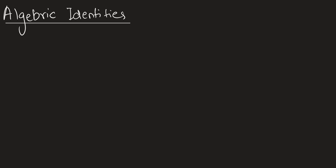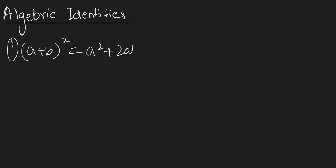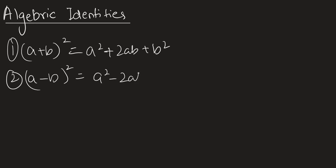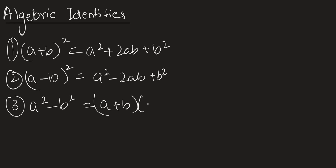In this video, we'll be looking at three algebraic identities. The first one is a plus b whole square, which is a squared plus 2ab plus b squared. The second one is a minus b whole square, which is a squared minus 2ab plus b squared. And the third one is a squared minus b squared, which is a plus b times a minus b.